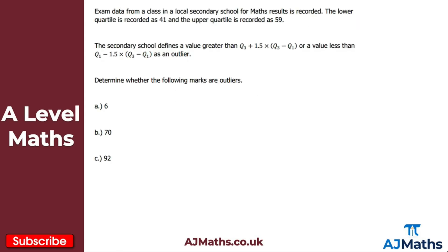Taking a look at this question, what we've got is exam data from a class in a local secondary school for math results. The lower quartile is recorded as 41, so Q1 = 41. The upper quartile is recorded as 59, so Q3 = 59. Now the secondary school defines a value greater than Q3 + 1.5(Q3 - Q1) or a value less than Q1 - 1.5(Q3 - Q1) as an outlier.